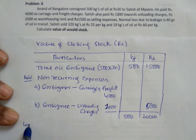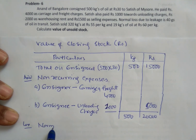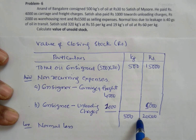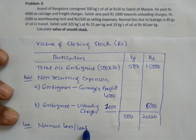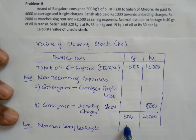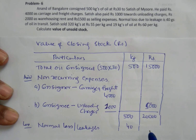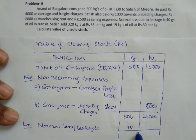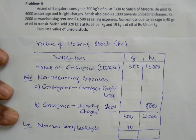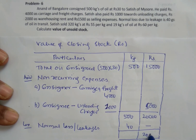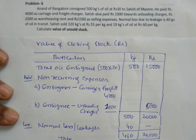In this total value there is a normal loss. Normal loss is a loss which occurs due to natural conditions, for example leakage. Here there are 40 kgs of loss. There is a decrease in kgs but no effect on the rupees. So the total amount remains Rs 20,000 and the net kgs are 460. This is the total cost.